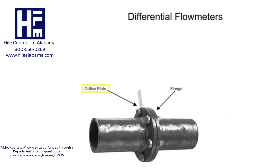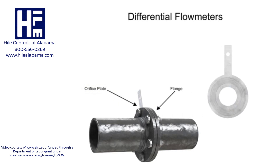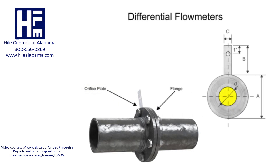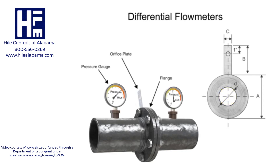The orifice plate of the flow meter is comprised of a circular metal disc with a specific hole diameter that reduces the fluid flow in the pipe. Pressure taps are added on each side of the orifice plate to measure the pressure differential.